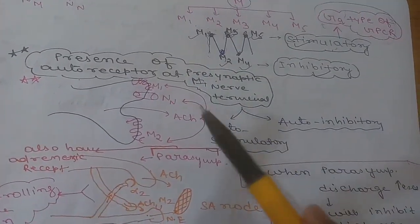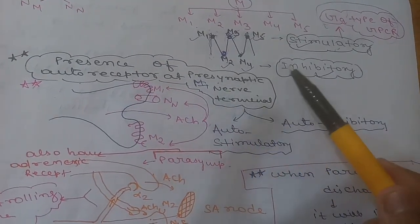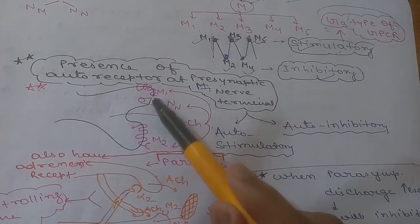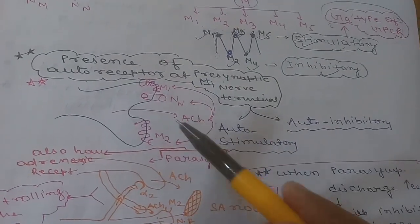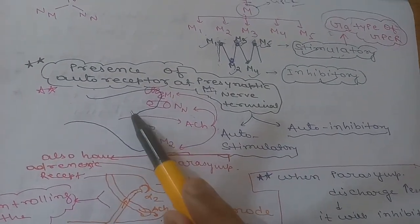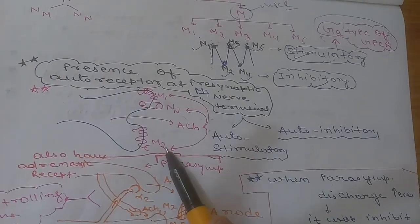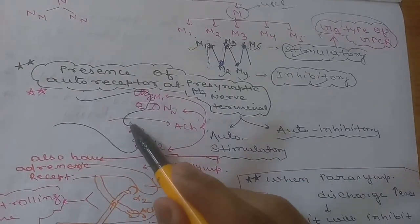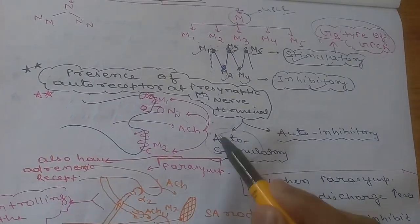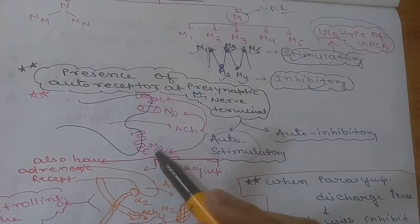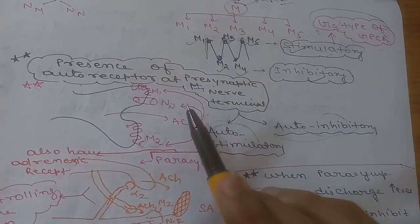An important point is the presence of auto-receptors at the pre-synaptic nerve terminal. The pre-synaptic terminal has M1, NN, and M2 receptors. Acetylcholine released from this membrane can bind back to these receptors: stimulatory M1 leads to auto-stimulation, while inhibitory M2 leads to auto-inhibition.